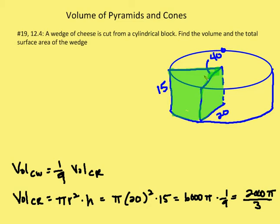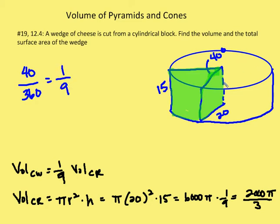The cheese wedge is really just one-ninth of the volume of the entire cheese round. We know this because the central angle of the cheese wedge is 40 degrees, which is one-ninth of 360 degrees. So 40 over 360 gives us one-ninth of the total volume. I'm going to find the total volume of the cheese round and then take one-ninth of that.